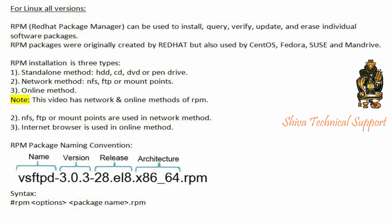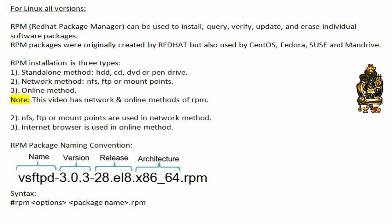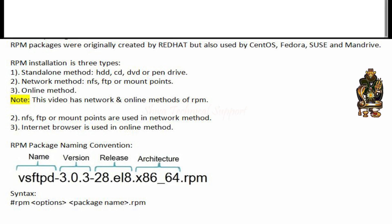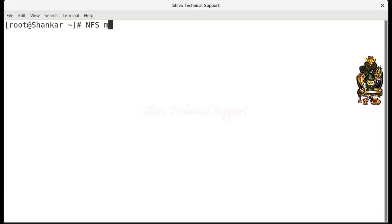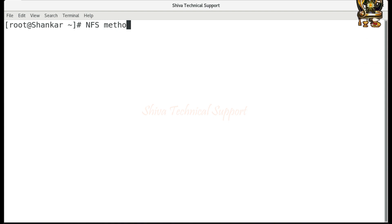Third is the online method. This video covers the network and online methods of RPM. NFS, FTP, or mount points are used in the network method. An internet browser is used in the online method. Now let's start practical. A webinar is used in the online method.